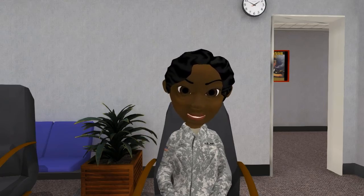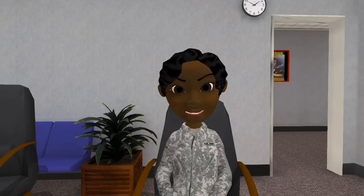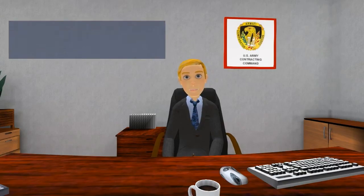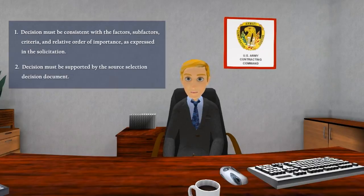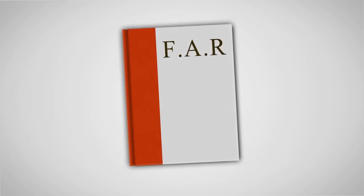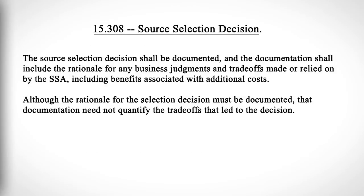That is good to know. Since these basic parameters are so important, let me ask about the last one. You said the SSA's broad discretion is not unlimited. What are the limits on that discretion? The limits are pretty simple. First, the decision must be consistent with the factors, sub-factors, criteria, and relative order of importance as expressed in the solicitation. Second, the decision must be supported by the rationale contained in the source selection decision document. In fact, FAR 15.308 specifically says: 'The source selection decision shall be documented, and the documentation shall include the rationale for any business judgments and trade-offs made or relied on by the SSA, including benefits associated with additional costs.' Although the rationale for the selection decision must be documented, that documentation need not quantify the trade-offs that led to the decision.